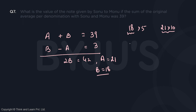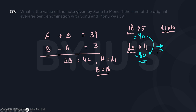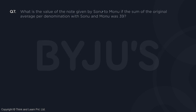Now Sonu has an average of 20 because his average increased by 2, and the number of notes with him is 4 because he gave 1 note to Monu. From here I can say the initial amount with Sonu was 90 and the new amount with Sonu is 80 — his amount decreased by 10. Why did it decrease by 10? Because he gave that 10 rupee note to Monu. So the value of the note given by Sonu to Monu is 10 rupees.